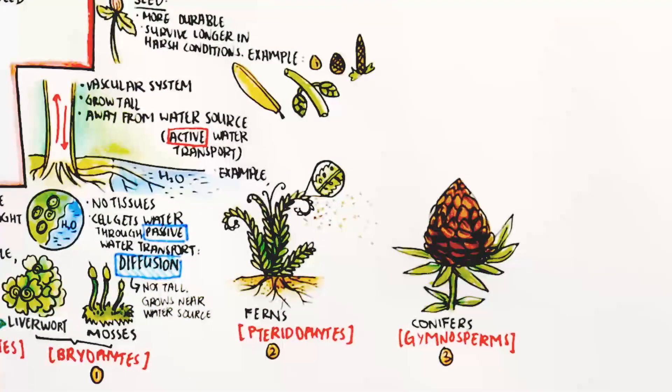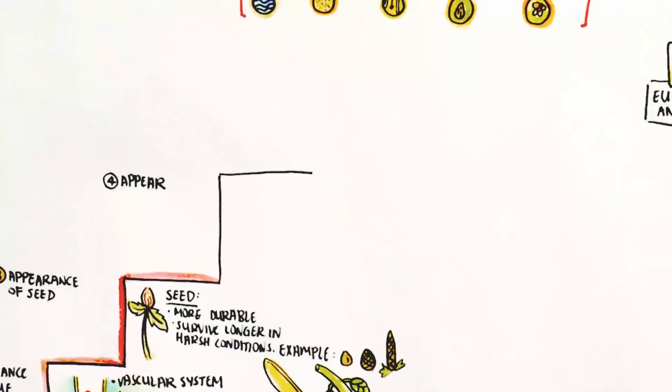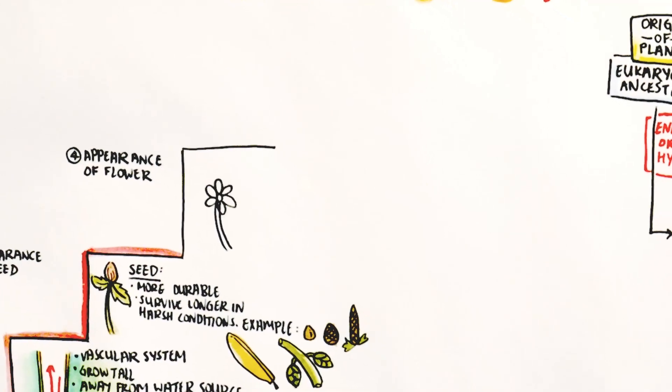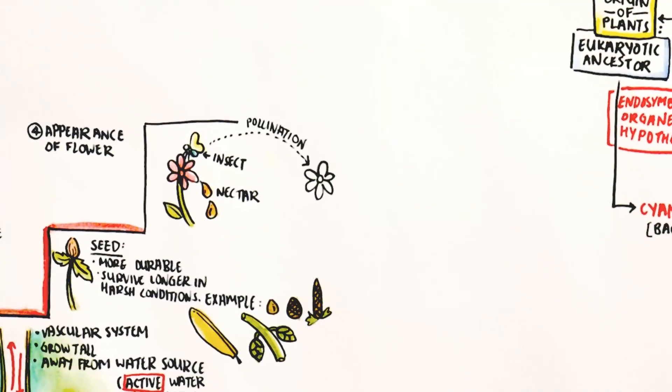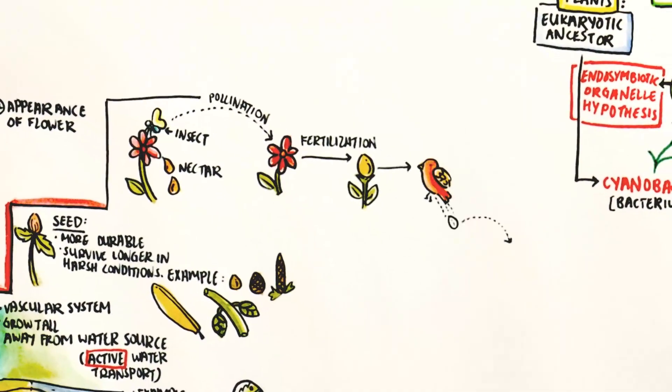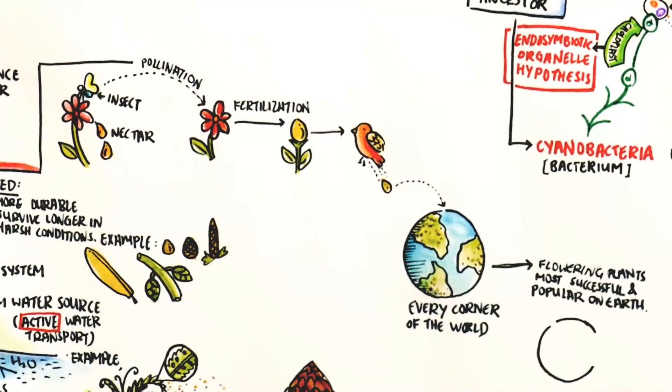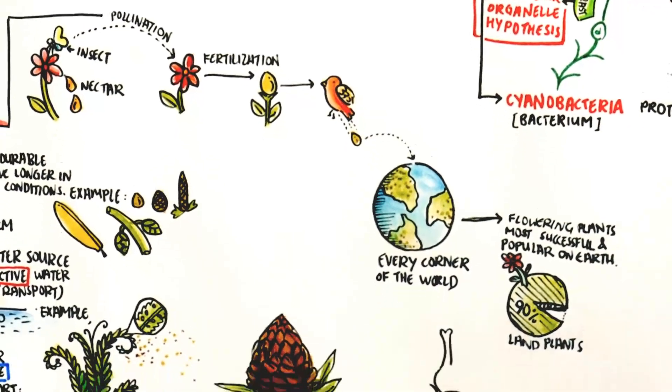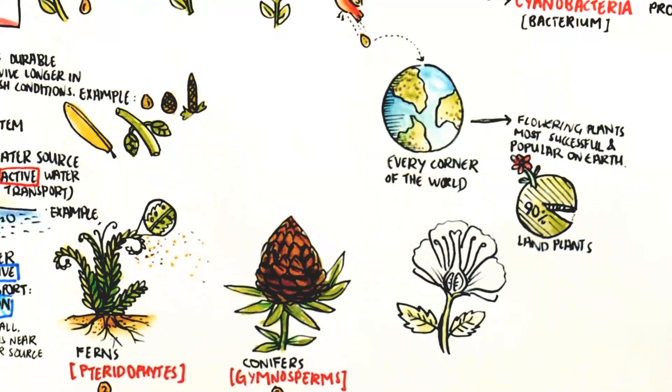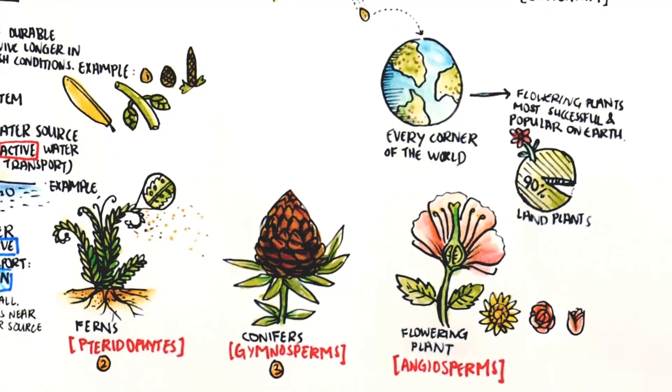Lastly, the appearance of flowers. Flowers and fruits make flowering plants most successful and popular on earth. They account for 90% of the land plants. Hence, we move from gymnosperms to angiosperms.